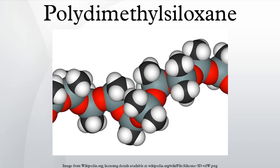Silane precursors with more acid-forming groups and fewer methyl groups, such as methyltrichlorosilane, can be used to introduce branches or cross-links in the polymer chain. Under ideal conditions, each molecule of such a compound becomes a branch point, which can be used to produce hard silicone resins. In a similar manner, precursors with three methyl groups can be used to limit molecular weight, since each such molecule has only one reactive site and so forms the end of a siloxane chain.